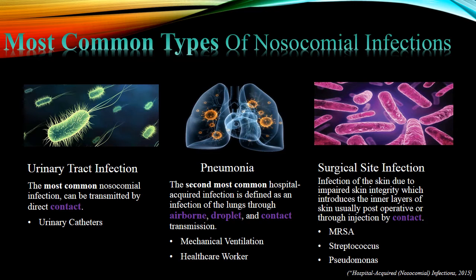Pneumonia can also be transmitted from a healthcare worker, which is why it is very important to wash hands, use protective equipment for each patient, and ensure cleanliness when entering patient rooms. The third common type is surgical site infection, which occurs when impaired skin integrity introduces bacteria to the inner layers of the skin, usually during or after an operation. The most common organisms are MRSA, Staphylococcus, and Pseudomonas. Following infection control guidelines is essential to decrease nosocomial infections.